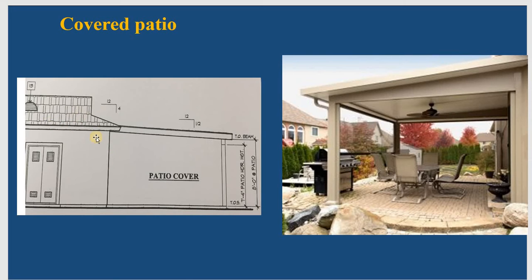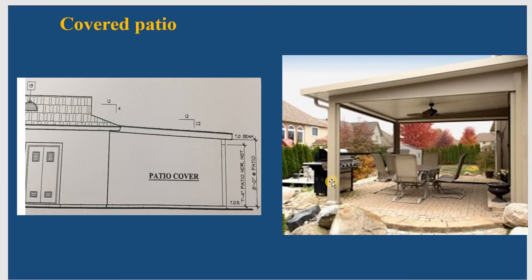If you look at this elevation of the existing house and the cover patio, you see the set group has a slope — not really much, but the slope is there for the water. From here the water can go down from the set group and go to the downspout. This is the post — a lot of people use 4x4, some people use 6x6, it depends on you.